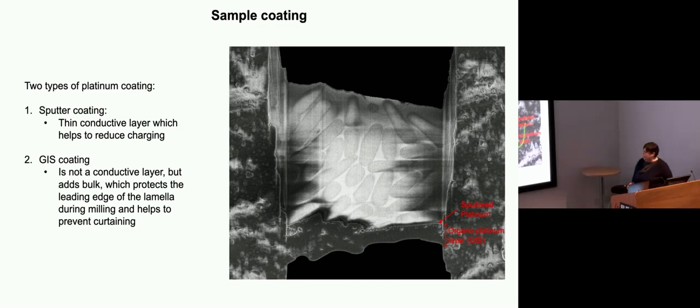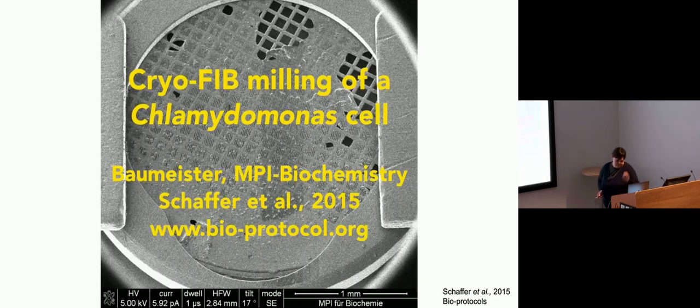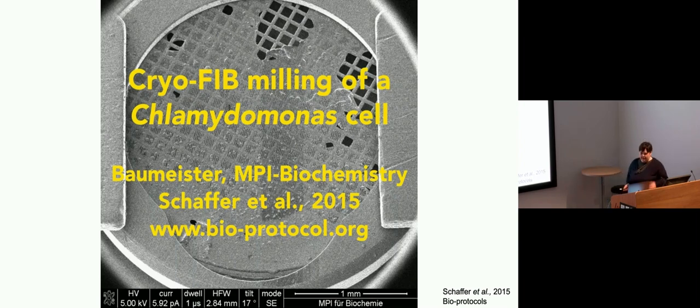If we come back to my example, we can just see these two layers. This is my lamella and this layer here, this is where the sputter platinum is. It's just a very thin few nanometer layer for conductivity. And then you have the much thicker gist coating there. Now I'm going to show, use this video from this BioProtocols paper from 2015 and show the milling process.